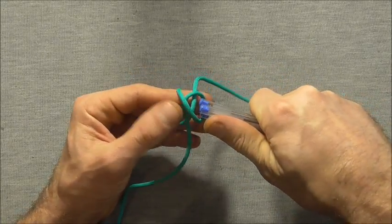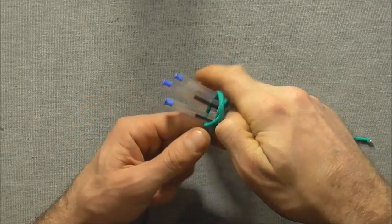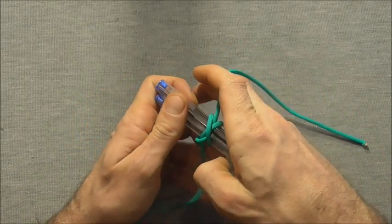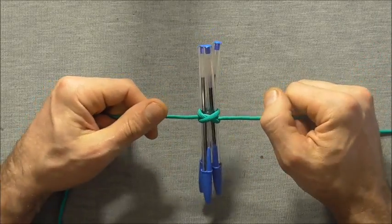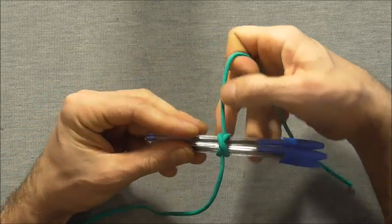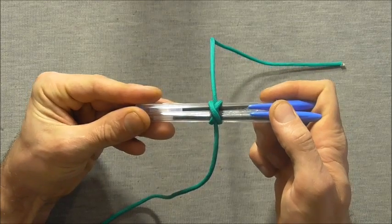Slide it off and place it over the object you want to constrict, in this case my mock bundle of sticks. We can pull that tight and there you have an easy constrictor on the bite.